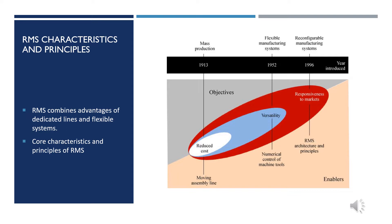If the company requires higher output, the DML cannot supply the full demand and the firm loses sales opportunities and consequently may lose market share. By contrast, FMS possess a general flexibility that can produce a variety of products, but their production is far more expensive than producing on DML. The FMS consists of general-purpose CNC machines and other forms of programmable automation.